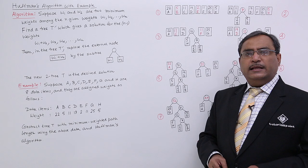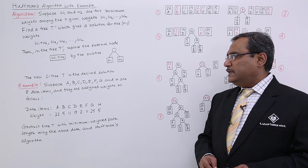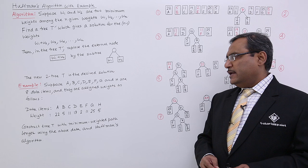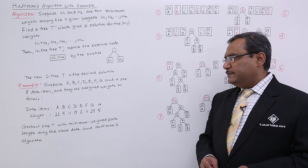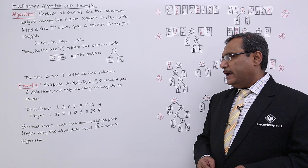Suppose A, B, C, D, E, F, G and H are 8 data items and they are assigned weights as follows. Data items are A, B, C, D, E, F, G, H and the respective weights are 22, 5, 11, 19, 2, 11, 25 and 5.